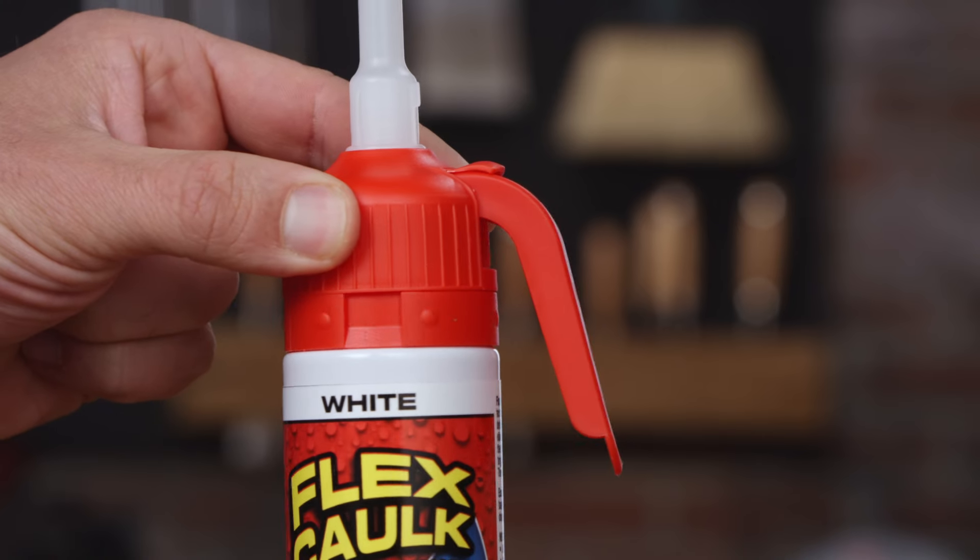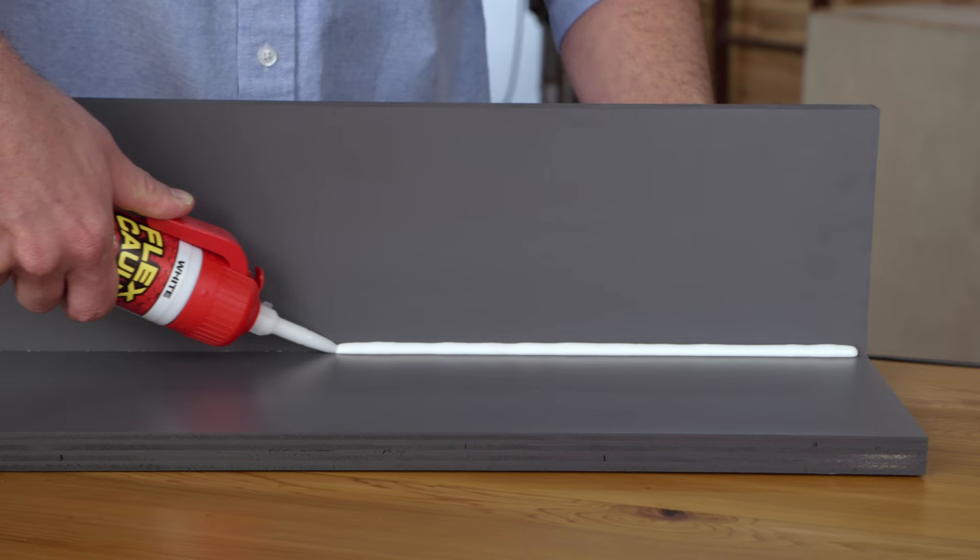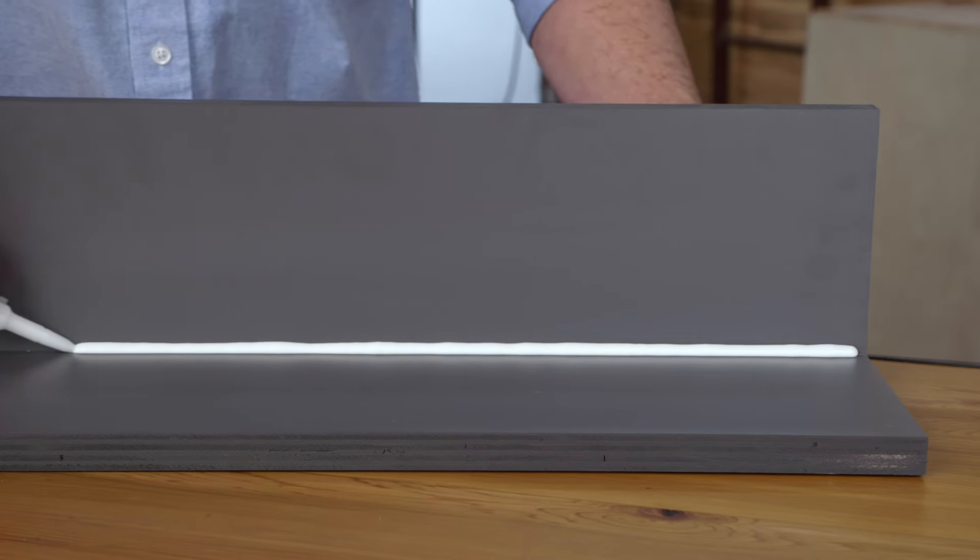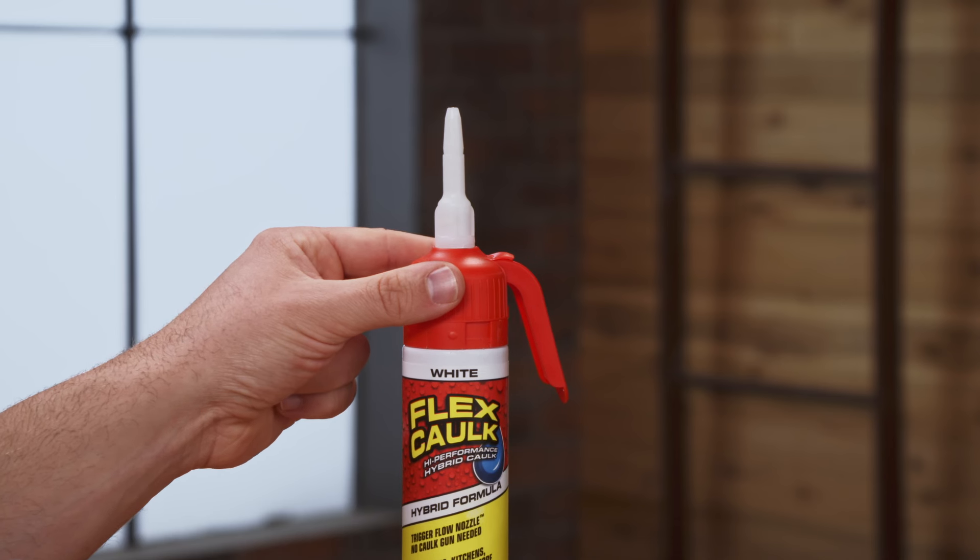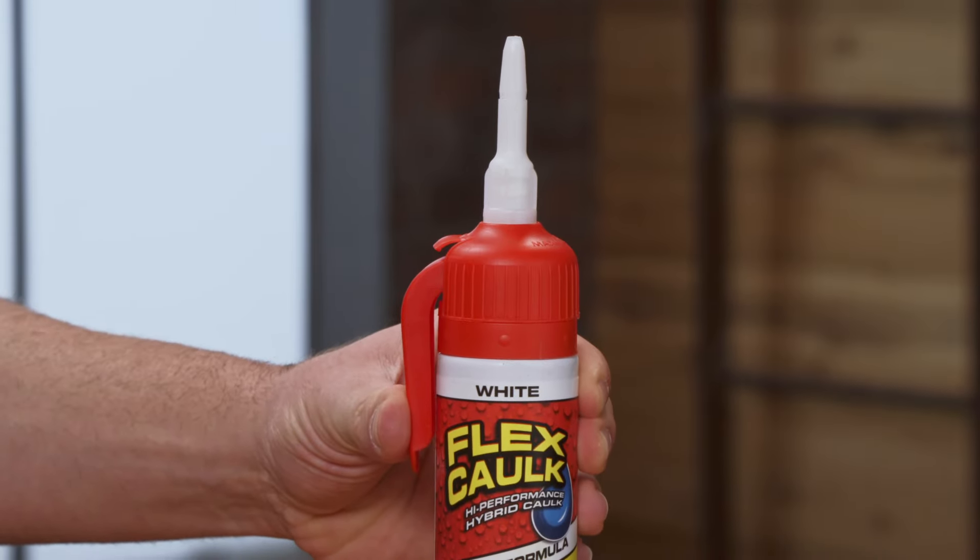As you turn the trigger flow nozzle towards min or max, you'll see the trigger open and close. As you turn towards the max, the trigger flow becomes wider and the flow becomes stronger. When you turn the trigger flow nozzle all the way past the minimum position, it's now in the off position and nothing will come out.